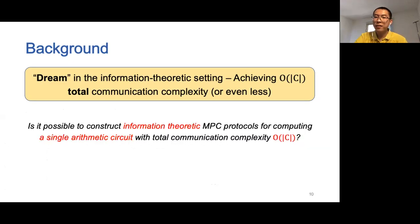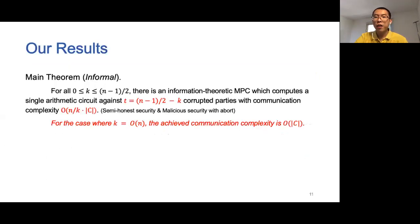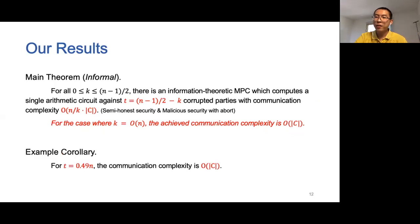Many attempts towards solving this question lead to our following question: Is it possible to construct information-theoretic MPC protocols for computing a single arithmetic circuit with total communication complexity O(C)? In this work, we answer this question affirmatively. For all K smaller than (N-1)/2, there is an information-theoretic MPC which computes a single arithmetic circuit against (N-1)/2 - K corrupted parties with communication complexity O(N/K · C). Note that when K is O(N), the achieved communication complexity is O(C). For example, when T is 0.49N, the achieved communication is O(C).